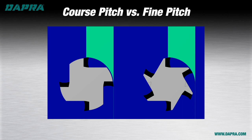In our diagram, both cutting tools are engaged at about 50 percent width of cut, but the coarse pitch tool on the left has only one tooth in the material at any given time, while the fine pitch tool on the right has two teeth engaged. The fine pitch tool will deflect more than the coarse pitch tool when working with a long-length tool.